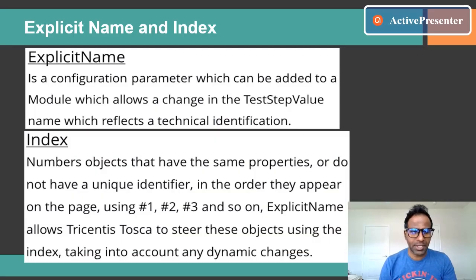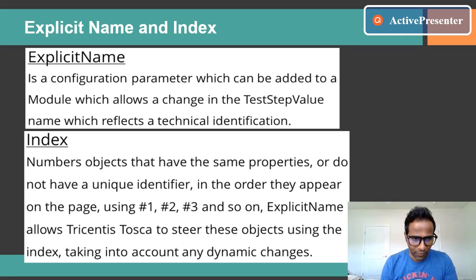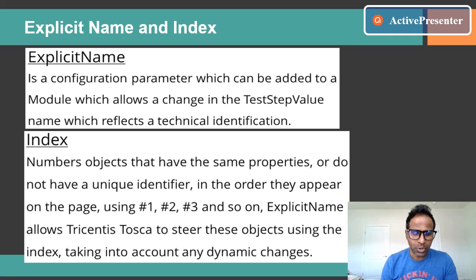Our first agenda item is explicit name, and the second is index. Explicit name is a configuration parameter which can be added to a module, allowing a change in the test step value name. It reflects a technical identification — whenever there is a control on your system under test application which cannot be identified using available properties, you can define your own configuration parameter as explicit name to identify the object or control.